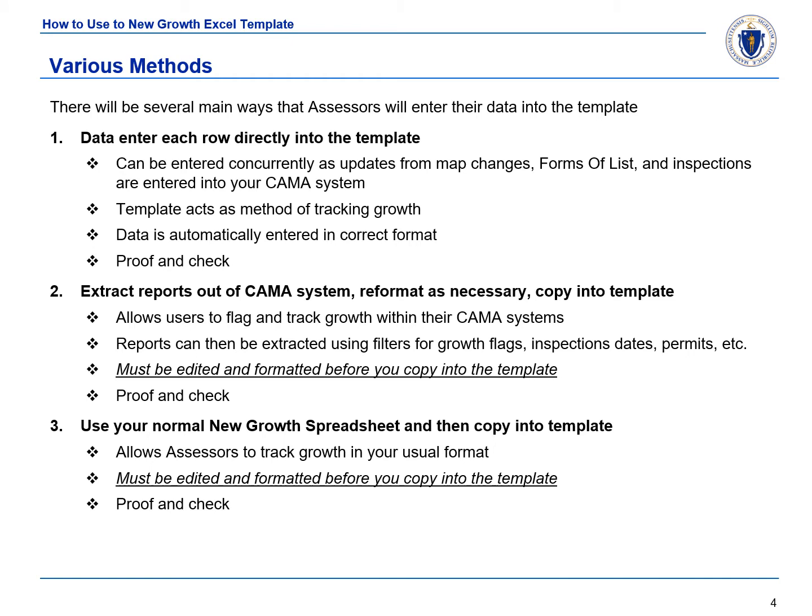There are various methods to enter data into the template. The first is to manually data-enter each row directly into the template. Data can be entered concurrently as updates from map changes, forms of lists, and inspections are entered into your CAMA system. The template itself acts as a method of tracking growth. Data is automatically entered in the correct format. Be sure to proof and check your entries.